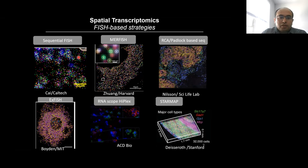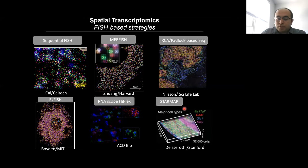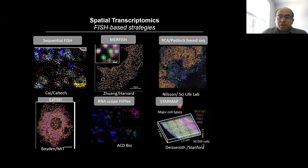There are two main FISH-based spatial transcriptomics technologies from Caltech and Harvard: sequential FISH and MERFISH. There are also other approaches called RCA or padlock-based sequencing, sometimes called in-situ sequencing, developed in Sweden. Dr. Boyden at MIT has combined expansion microscopy with multiplexing technologies, and the company ACD Bio has been developing high-multiplex RNAscope. At Stanford, Dr. Di Zilio in collaboration with Gary Nolan developed STARmap for 3D transcriptional analysis in brain. I'll cover these different technologies systematically today.